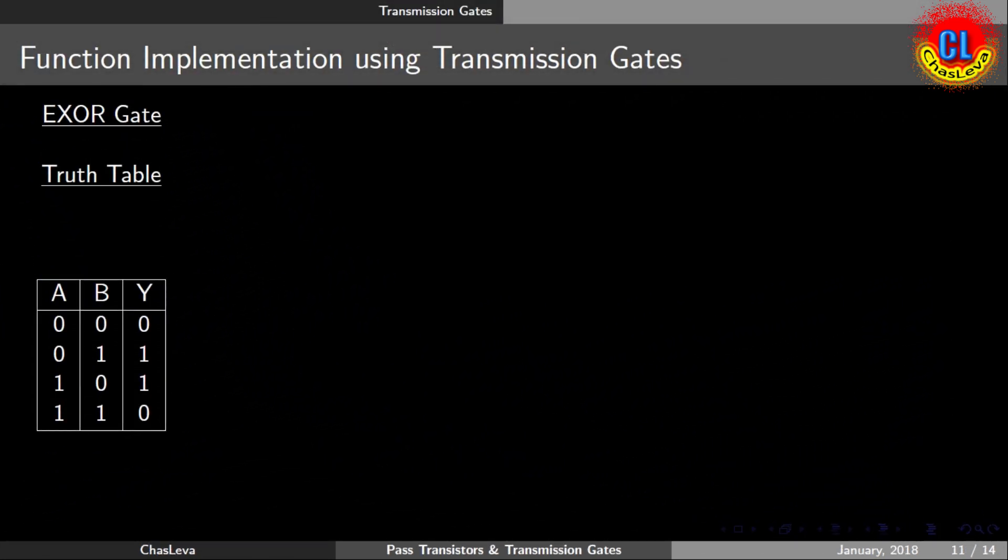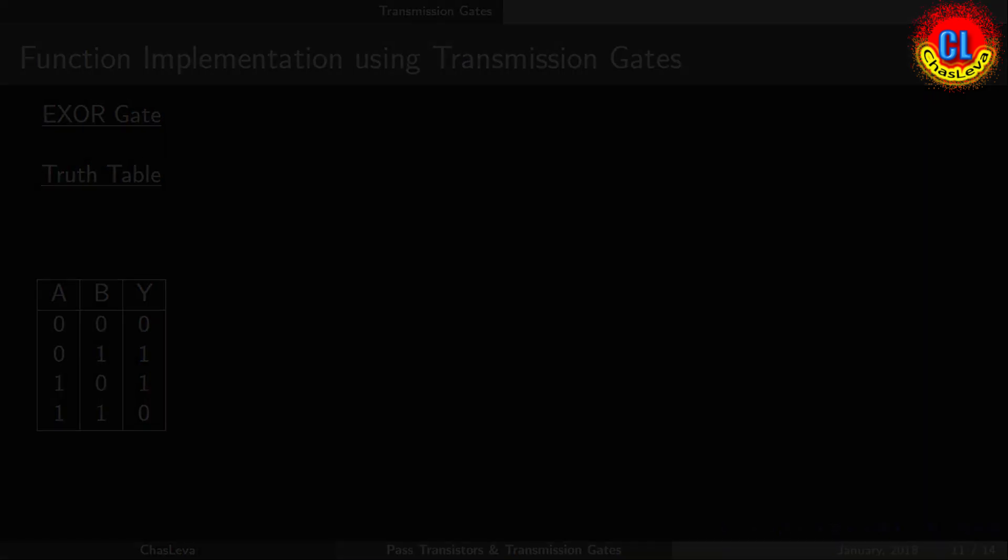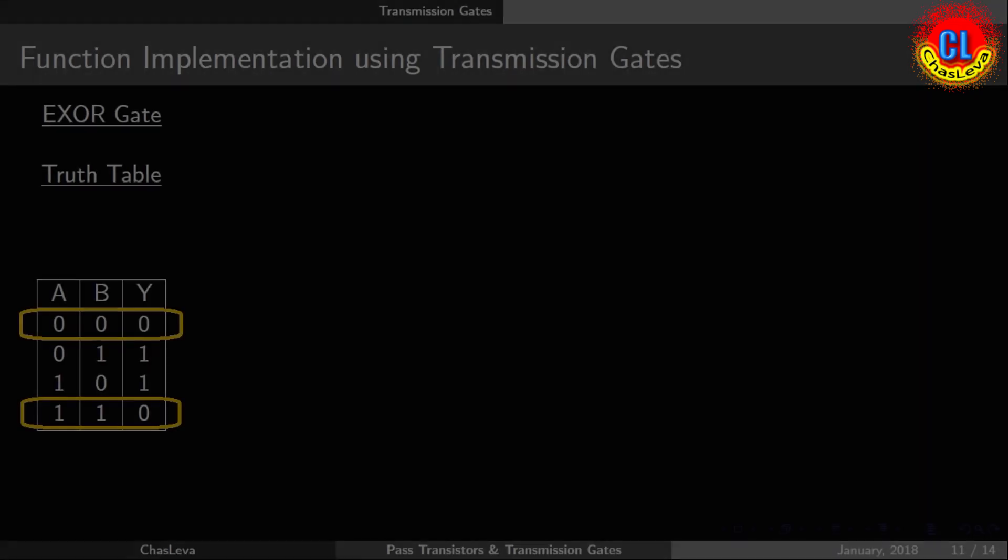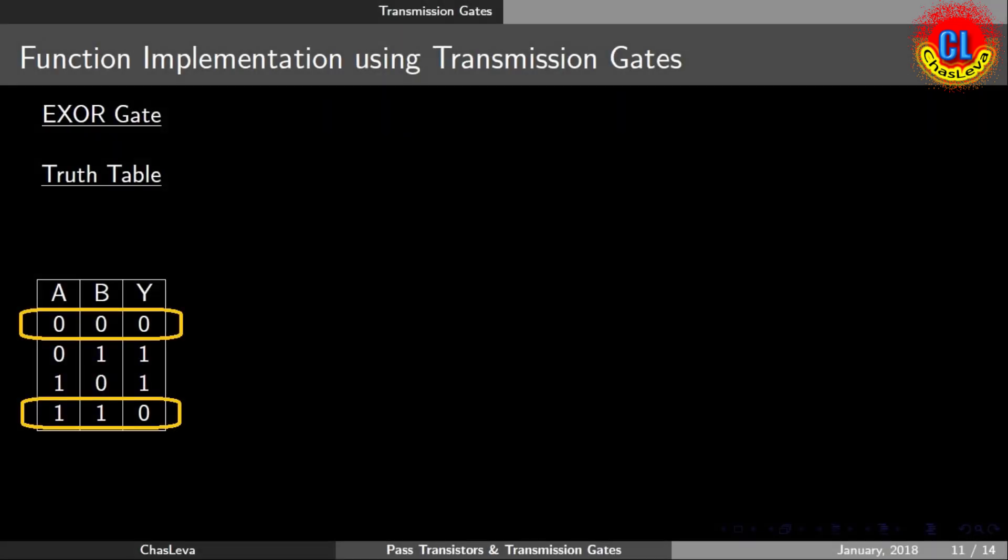Now, we will see the implementation of an XOR gate using transmission gates. We know the truth table of XOR gate. The output Y will be 1 if both the inputs A and B are not equal. The output Y will be 0 if both the inputs A and B are equal.